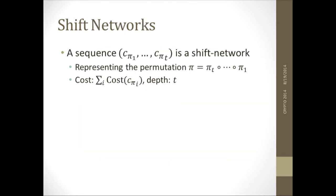What's a shift network? A shift network is just a sequence of those, right? If you have a whole bunch of shift columns, each one of them correspond to a particular permutation, then the permutation that you get out of applying each one of them is you get the first permutation concatenated to the second, concatenated to the third, et cetera. The cost is the sum of the costs. The depth is just the number of columns that you have here because the depth of each column is one.